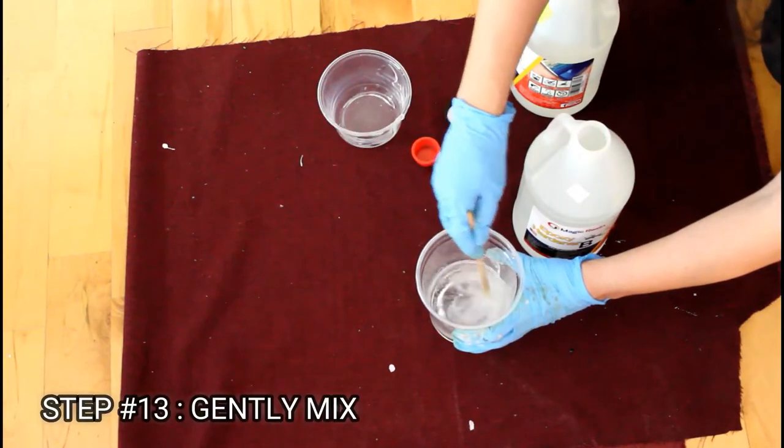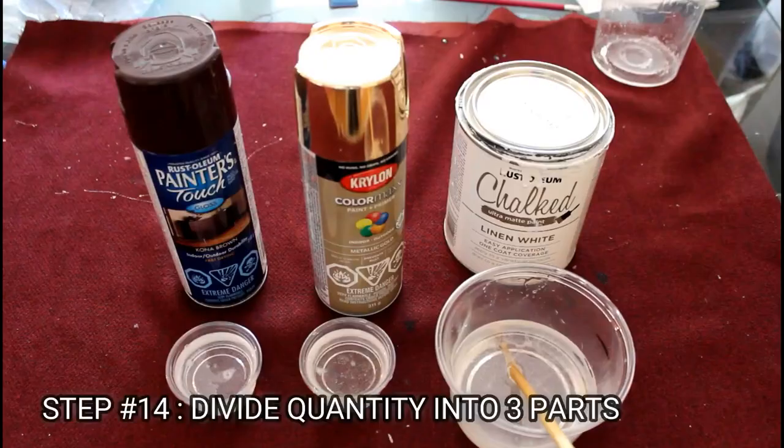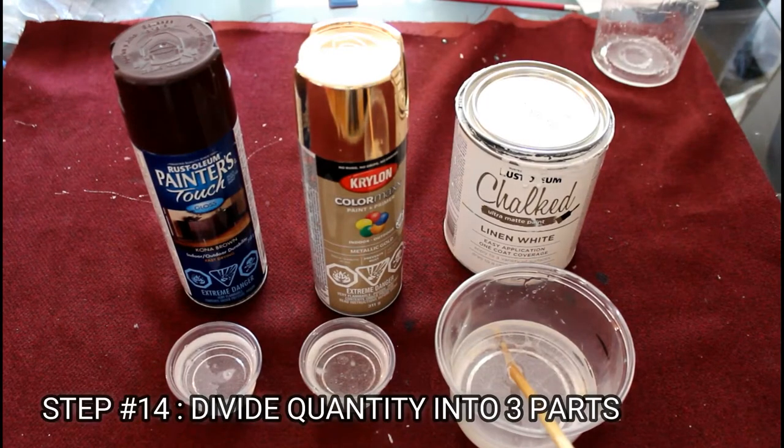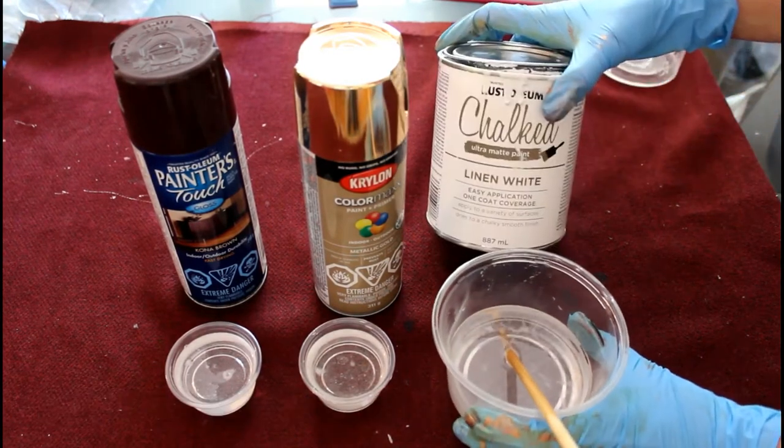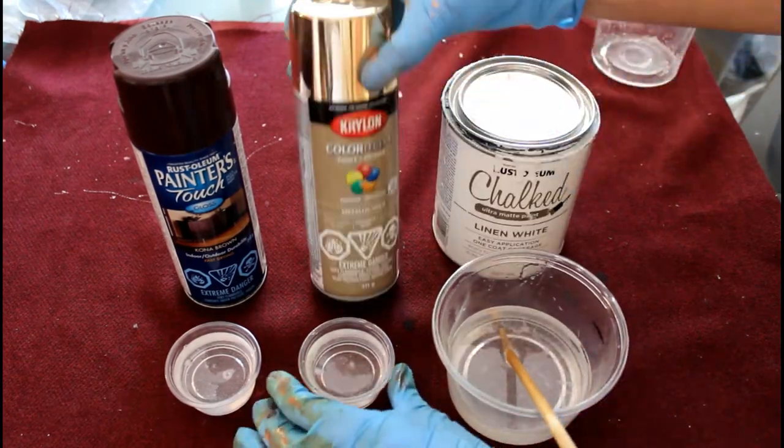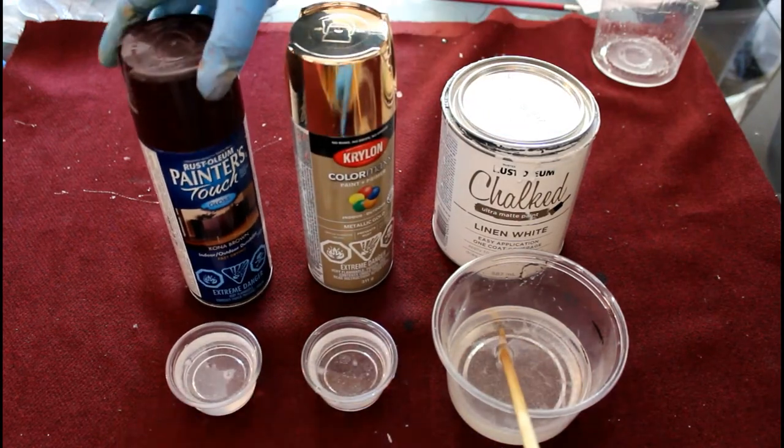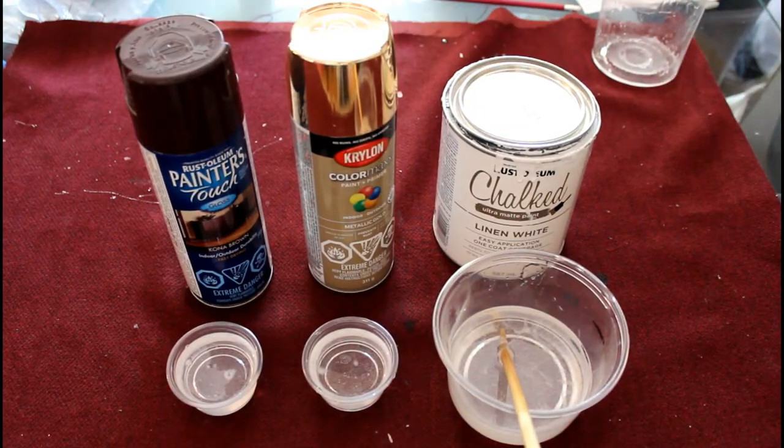I'll mix them slowly to avoid creating a lot of bubbles. Then I'll divide my quantity into three parts to add white chalk paint with the bigger part and metallic gold and brown spray paint in two smaller parts.